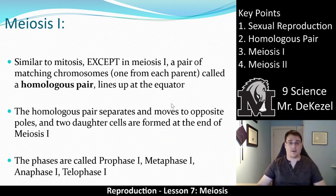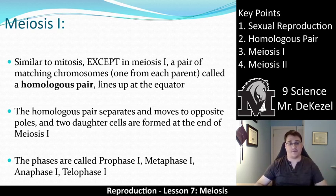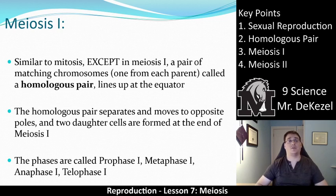The homologous pairs separate and move to opposite poles, and two daughter cells are formed at the end of meiosis 1. The phases are prophase 1, metaphase 1, anaphase 1, telophase 1 — same as mitosis, just with the number 1 after each. If a phase has a 1 after it, it's meiosis 1; if it has a 2, it's meiosis 2; and if there's no number, it's referring to mitosis.